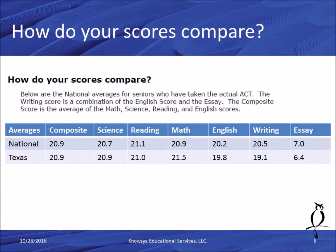You're probably wondering how does your score compare. The average score is around 21 on each of the sections, but looking at this slide you'll see the national averages — more specific. You have national versus Texas, composite versus science, reading, math, English, and writing, and the essay score. You can see the averages for seniors who've taken the actual ACT exam and how your scores compare.